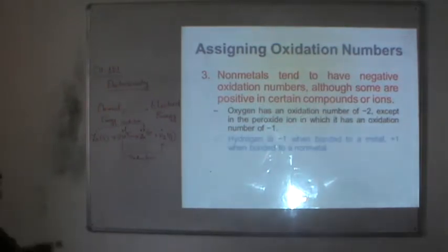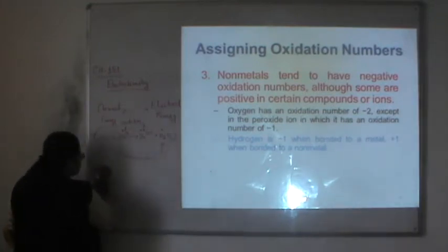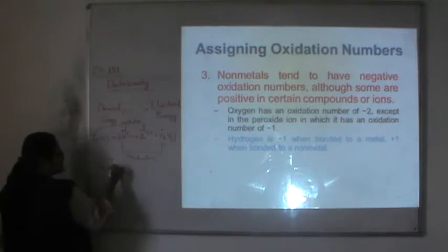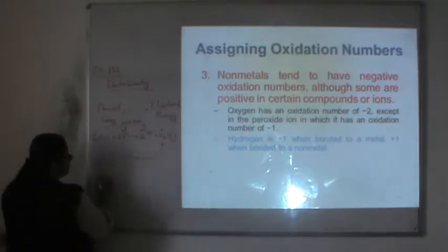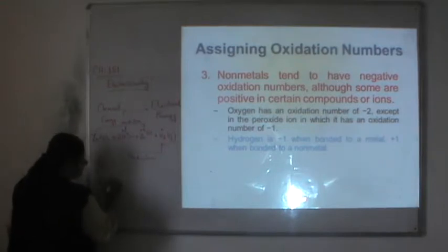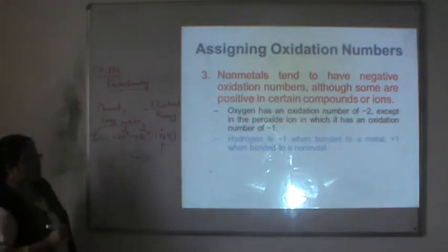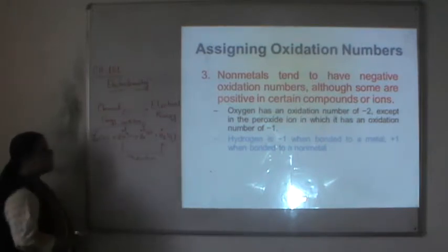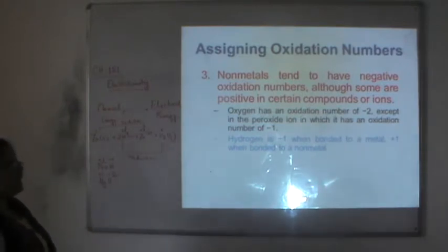Hydrogen is minus one when bonded with a metal, such as in sodium hydride where hydrogen is minus one and sodium is plus one. In water, hydrogen is plus one and oxygen is minus two. So hydrogen is minus one when bonded with a metal, and plus one when bonded with a non-metal.